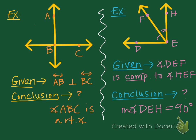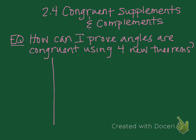Turn to your next right page and we're going to take one more short set of notes. Go ahead and title your notes 2.4 Congruent Supplements and Complements. Your central question is, how can I prove angles are congruent using four new theorems? We've already talked about three theorems up till now, and we're going to introduce four more. Draw your vertical line and let's take some notes.